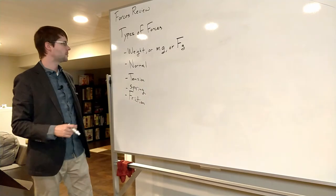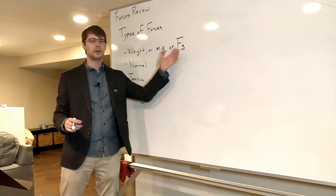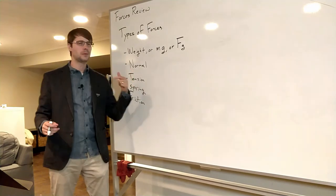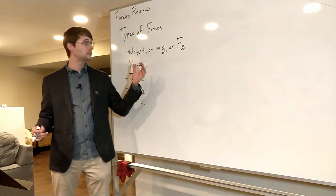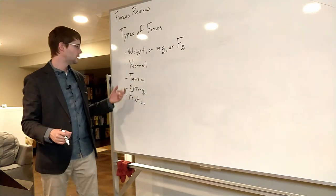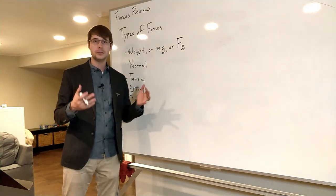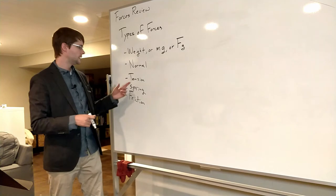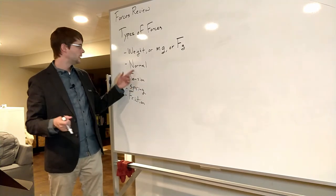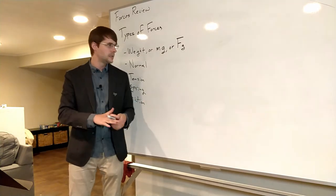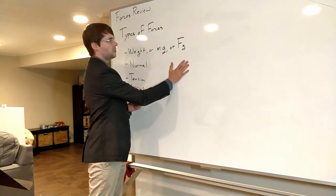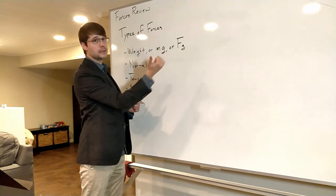All right, so we've got a few different types of forces here. We've got weight, which can also be written as mg or Fg. We've got normal, which can be written as just capital N or F sub normal. Tension, which is just capital T sometimes - T1, T2 if you've got multiple ropes or strings. This comes from a rope or a string or a cable. A normal force comes from a surface. So me pushing on this wall would be a normal force back against me.